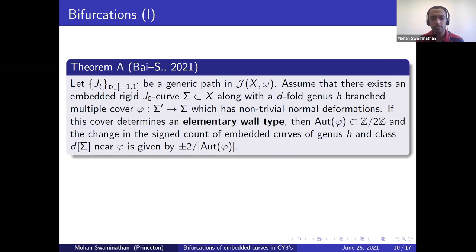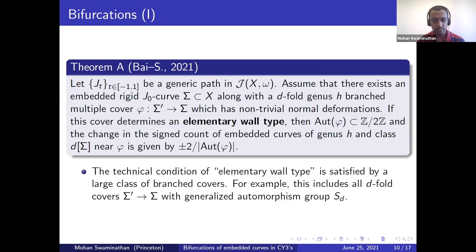The first conclusion is that φ has to have a very simple automorphism group, namely it is trivial or just Z mod 2. Moreover, the change in the number of embedded curves when we move from negative t to positive t, these embedded curves are of genus H and of class d times the class of Σ. And we look only in a small neighborhood of this multiple cover φ. Then the change in the number of embedded curves is plus or minus two or plus or minus one. The latter case occurs precisely when the automorphism group of φ is Z mod 2.